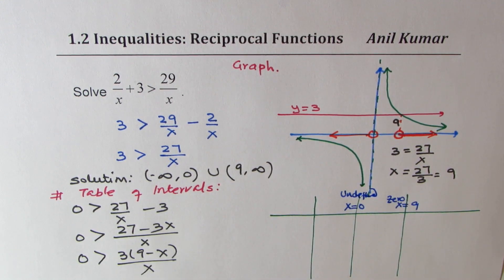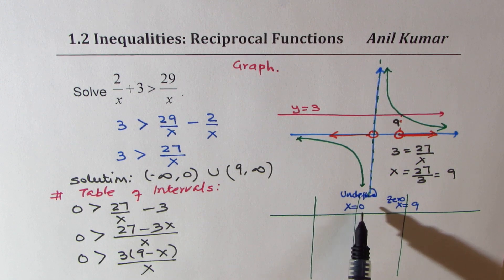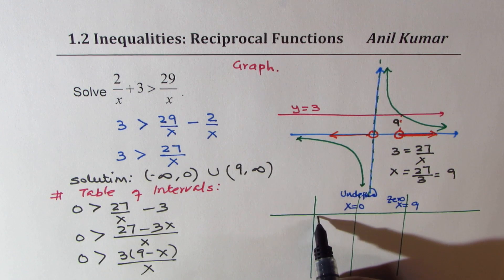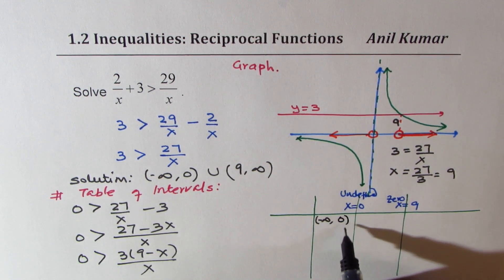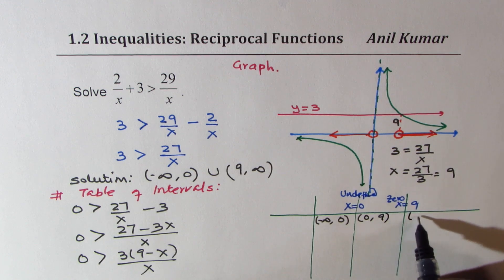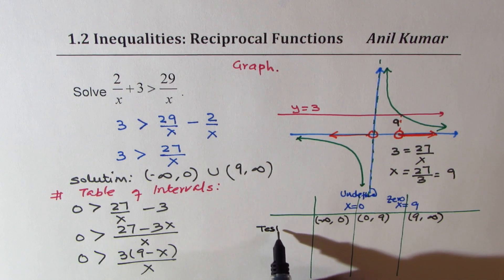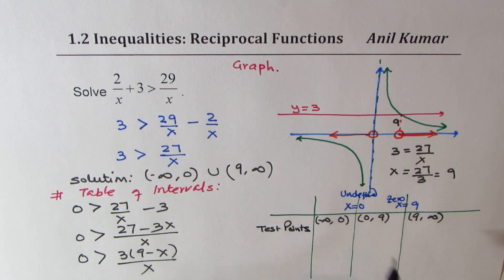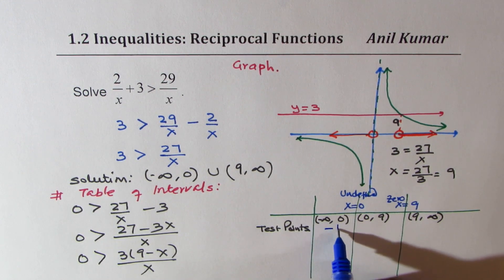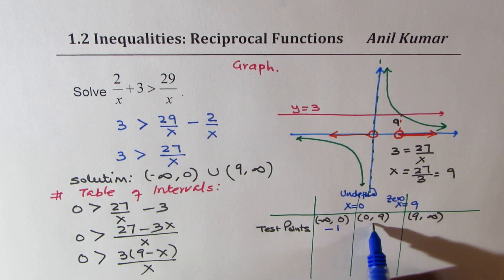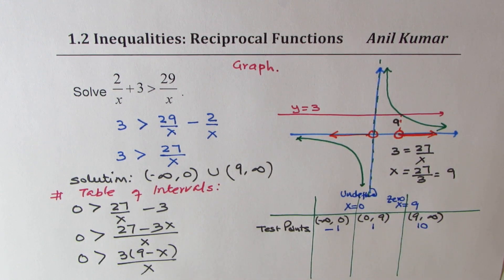We'll analyze the rational function on the intervals divided by zeros and vertical asymptotes. So this interval is from minus infinity to 0, and then we have from 0 to 9 and from 9 to infinity. Let's take test points in these intervals. From minus infinity to 0, I could take -1 as a test point. Here I could take 1 as a test point, and 10.